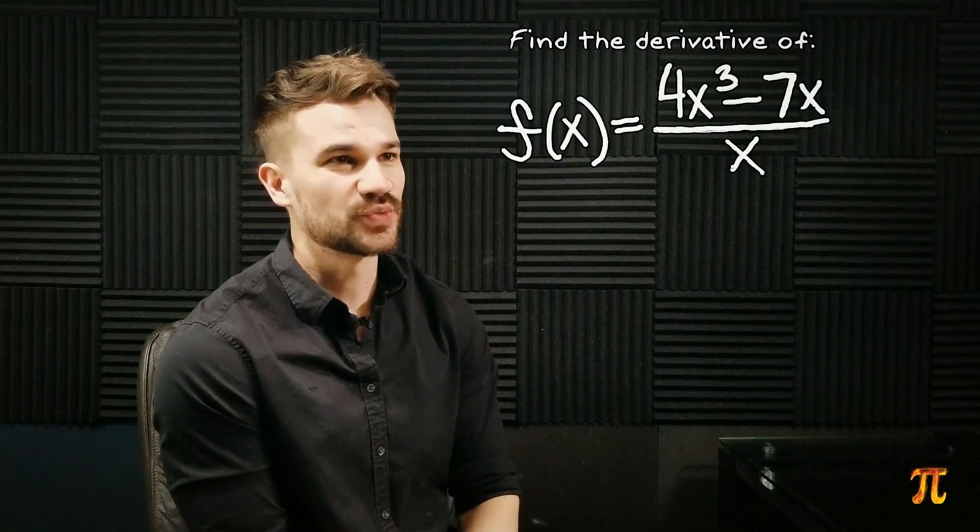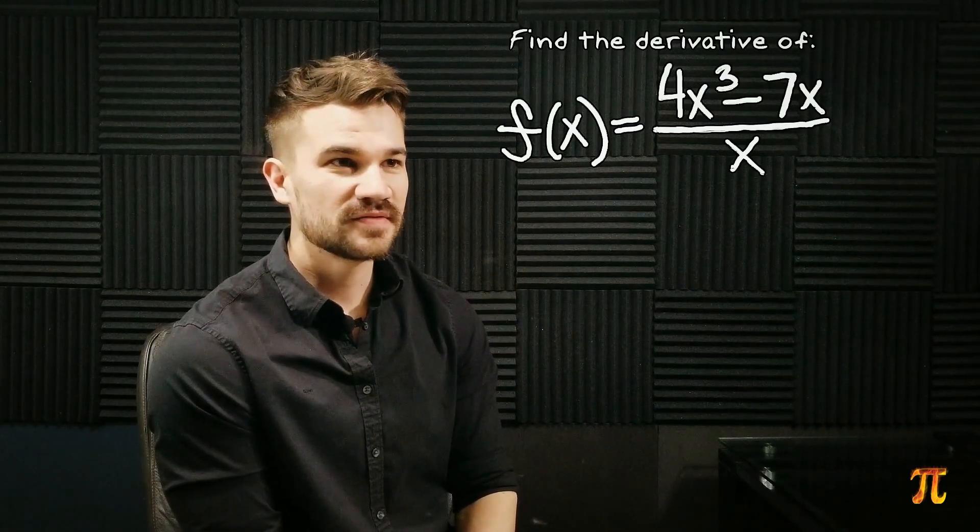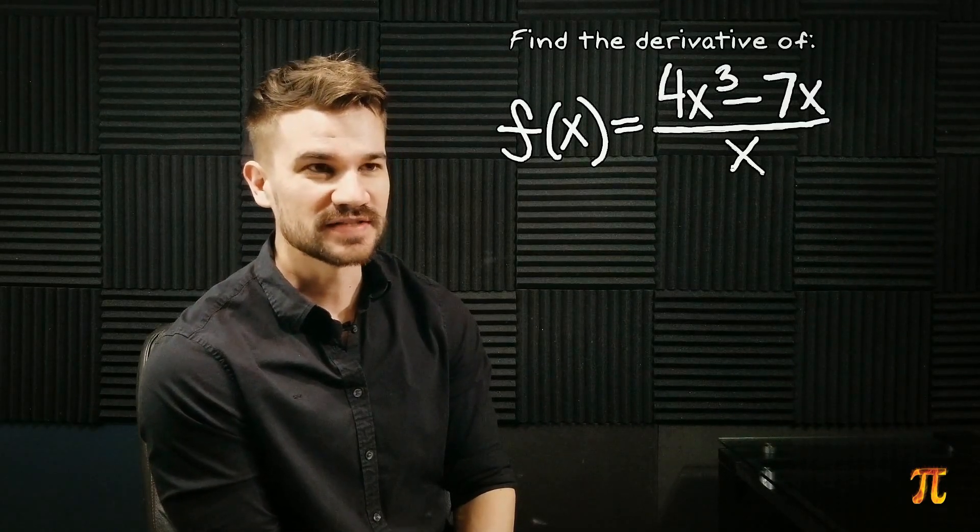Now when taking this derivative you might say okay it's a quotient so I'll use the quotient rule, but that would be an example of working hard and not smart.